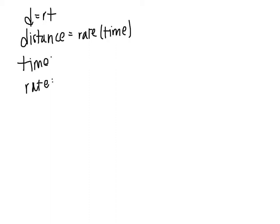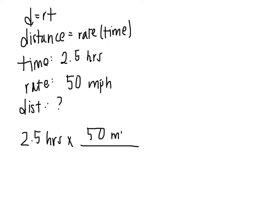A similar problem is with the dirt formula. d equals rt, where distance equals rate times time. If you're given both time and rate, the rate is the speed. We have 2.5 hours times 50 miles over 1 hour, which equals, once you cancel out the hours, 2.5 times 50 equals 125 miles, which is our distance.